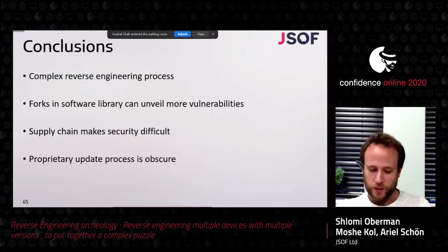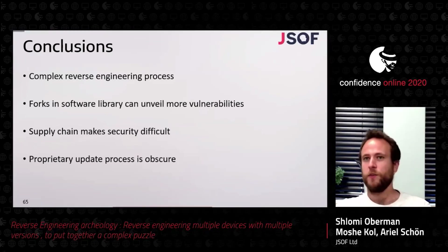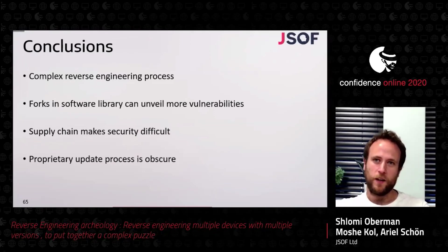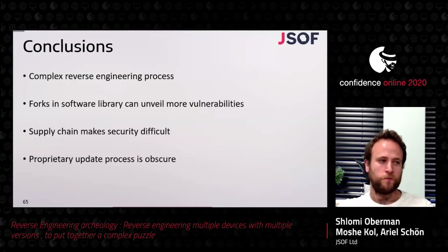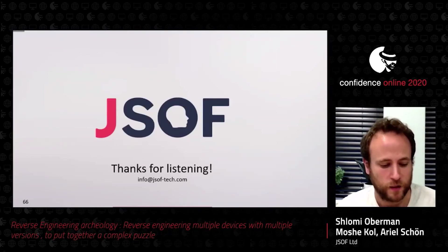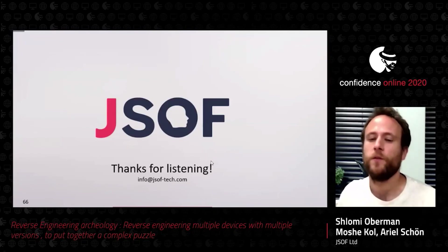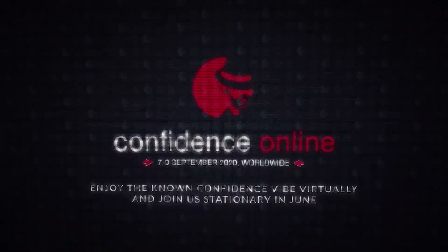To finalize: we did a complex reverse engineering process. Some vulnerabilities could only be found in forks — like the DNS vulnerabilities that could not be found in the Intel supply chain. Supply chain definitely poses challenges for security. There's a lot we don't know about how proprietary software updates work; we couldn't get to the bottom of who updates, when they update, or how much it costs. Thank you very much. We've got a few short minutes for questions.